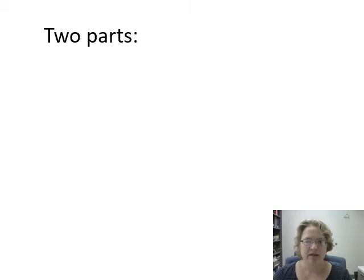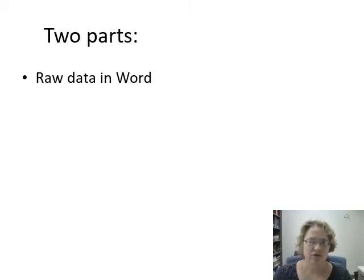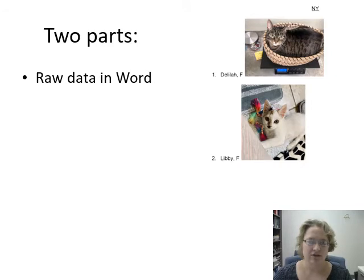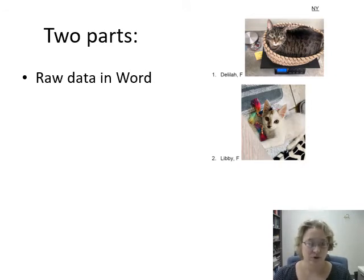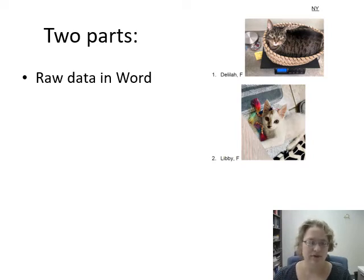There are two key parts to assignment 10. The first is your raw data in Word, where you're going to show the location and then put in your 30 cats — one through 30 for each location, so 60 total. For each cat you're going to have their name, their sex, and a picture. Resize the picture so it's reasonable.